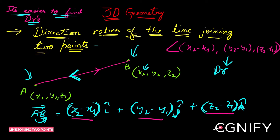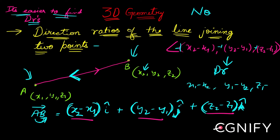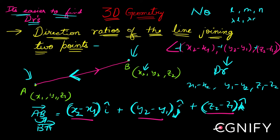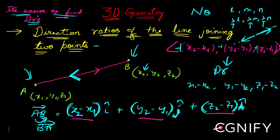What if we consider the vector BA instead — will its direction ratios be different? The answer is no. If you multiply all three components by -1, you get x1 - x2, y1 - y2, z1 - z2, which are the components of BA. But since direction ratios allow lambda (which can be positive or negative), multiplying by -1 just means pointing in the opposite direction — the same line has the same set of direction ratios regardless of which way the vector points or what its magnitude is.